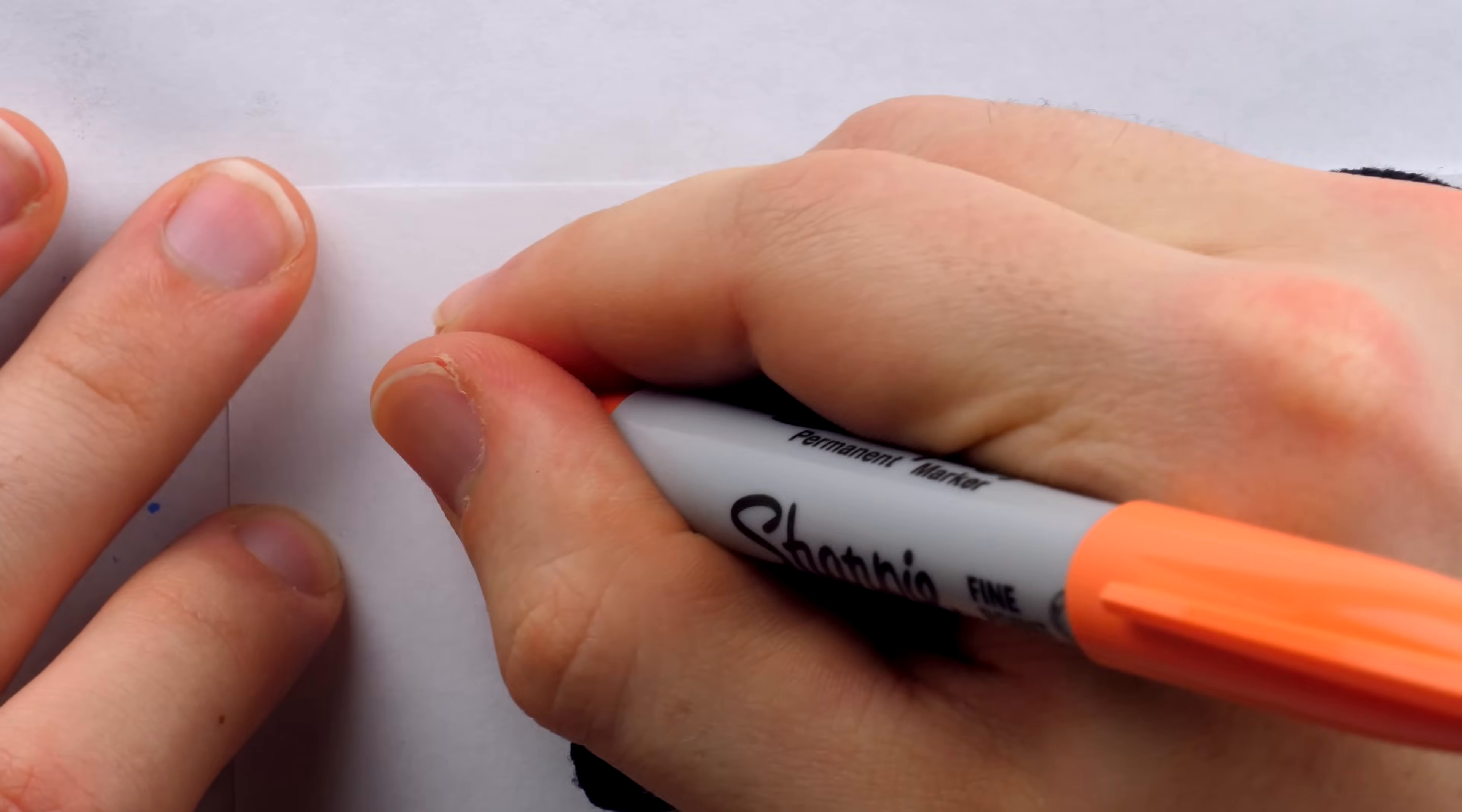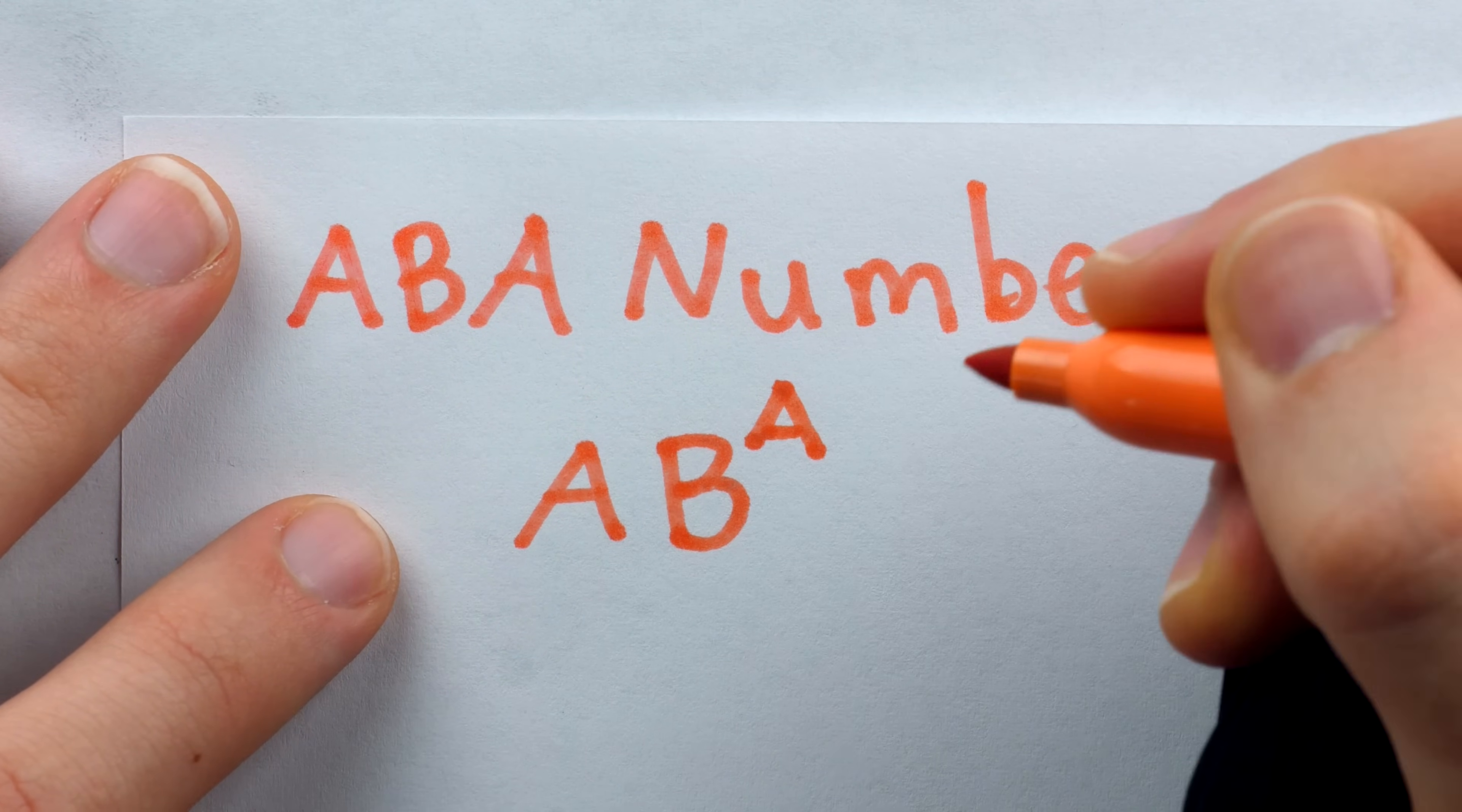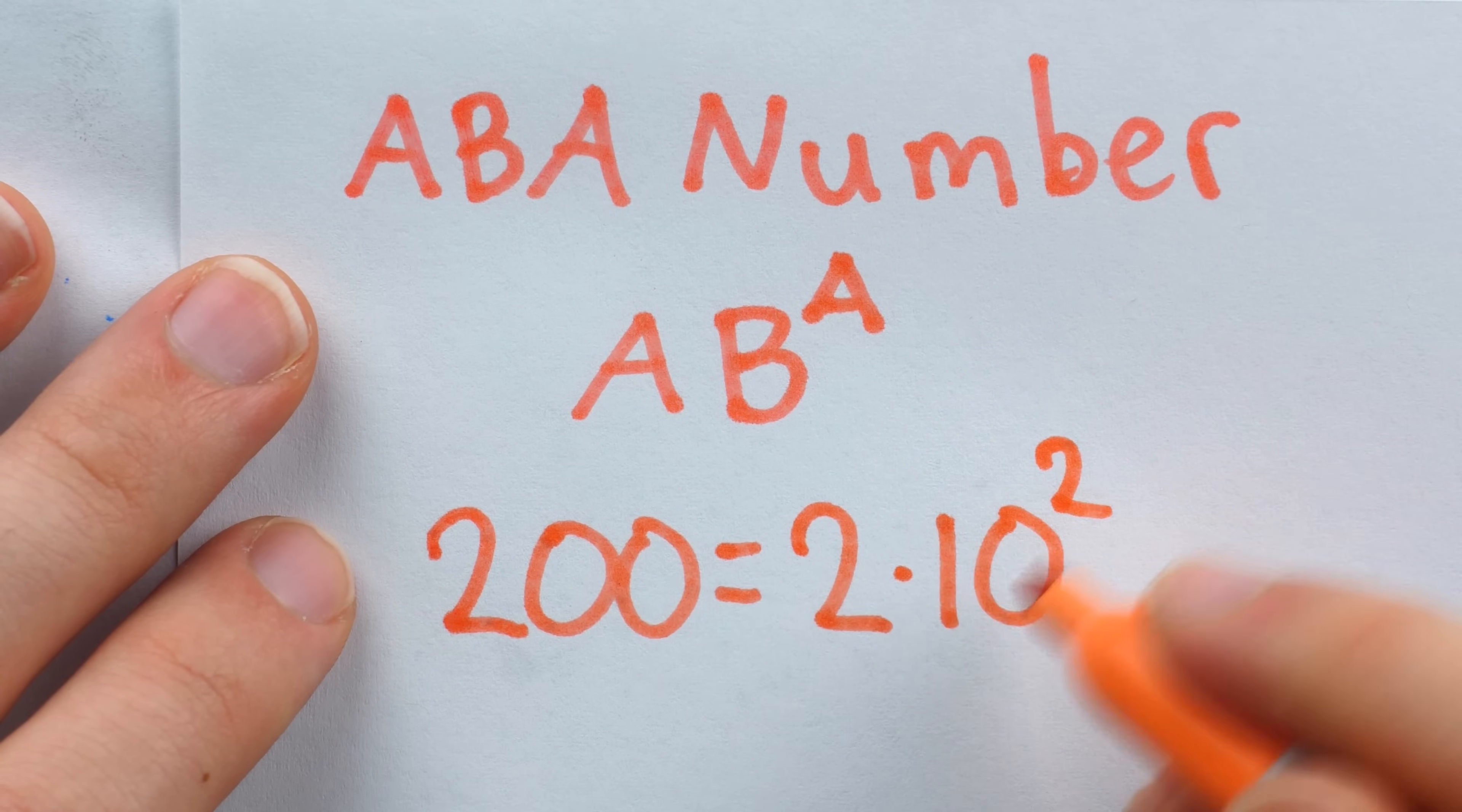200 also has this funny property of being what's called an ABA number. This is because it can be written as A times B to the power of A. You could pause the video and try to figure out how. Let me show you. 200 is equal to 2 times 10 to the power of 2. 10 squared is 100, doubled is 200.